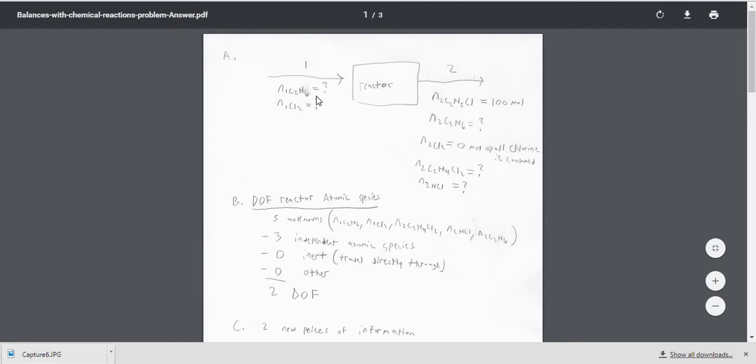We have no inerts, so nothing's going straight through where if we knew the inlet amount we'd know the outlet amount. And we have no other information. So there's two degrees of freedom, so currently we can't solve this problem.